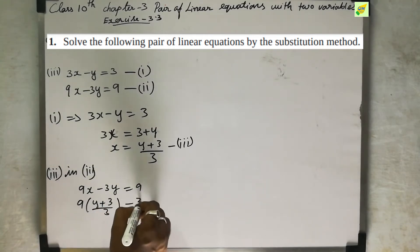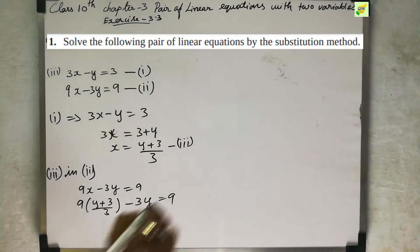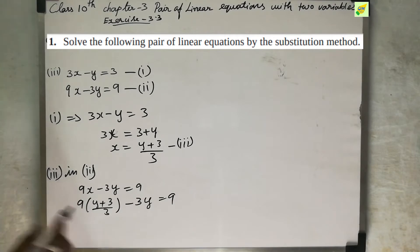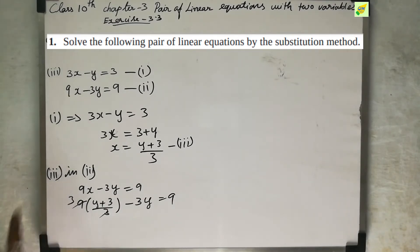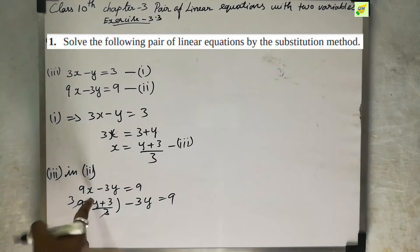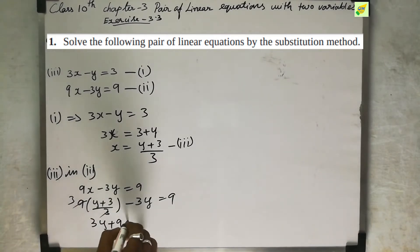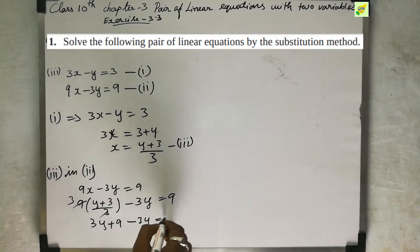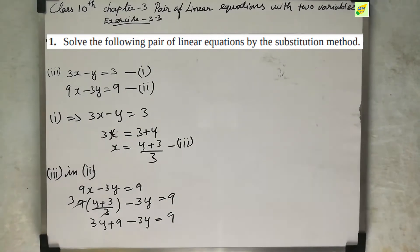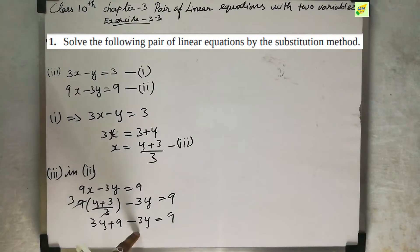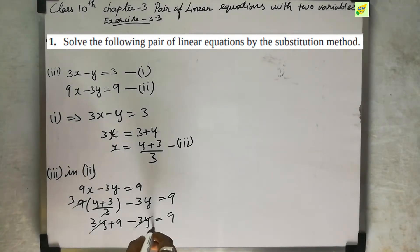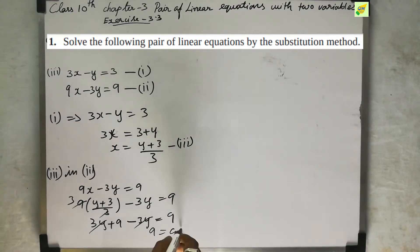Substituting into the second equation: minus 3y equal to 9. Multiplying through by 3, we get 3y plus 9 minus 3y equal to 9. So 3y minus 3y cancels out.